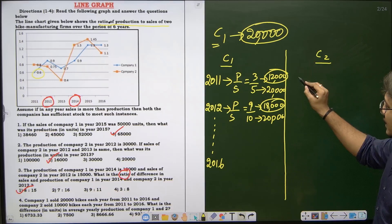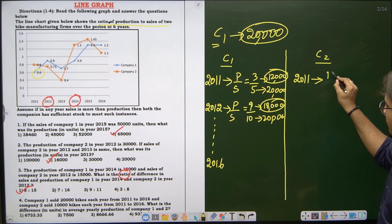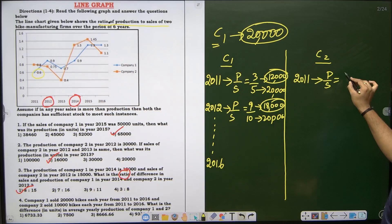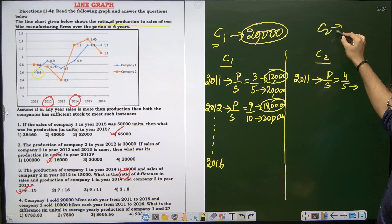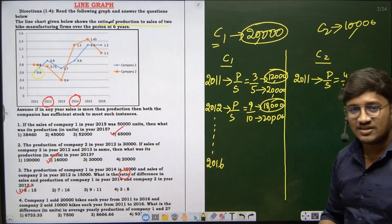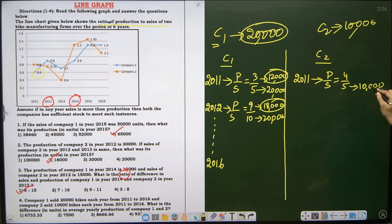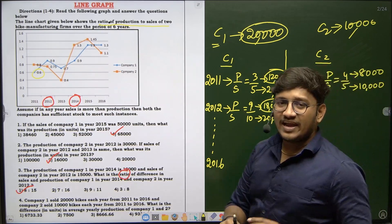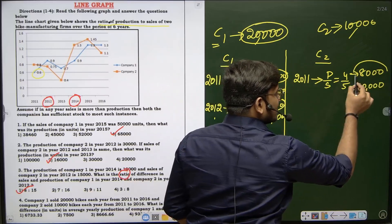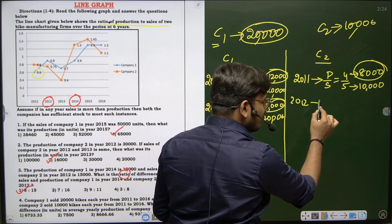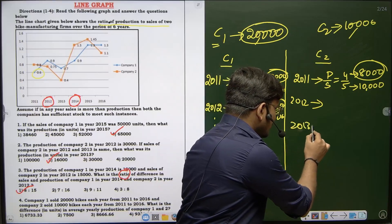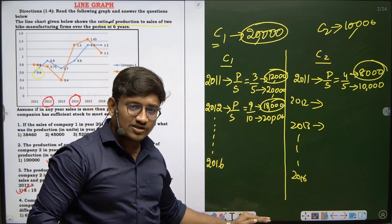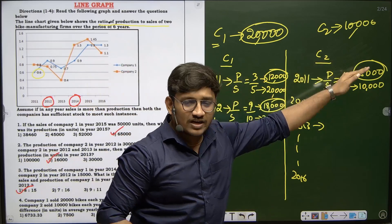For company 2 selling 10,000 bikes per year, in 2011 the ratio is 0.8, which equals 4 by 5. So 5 parts equals 10,000 and production is 8,000. Continue the same process for 2012 through 2016 to get all production values for company 2.